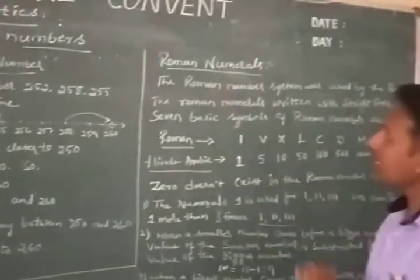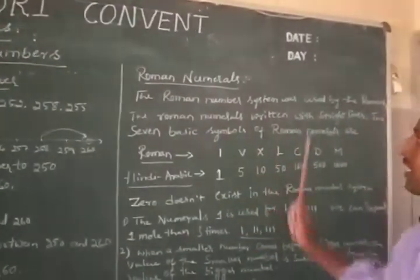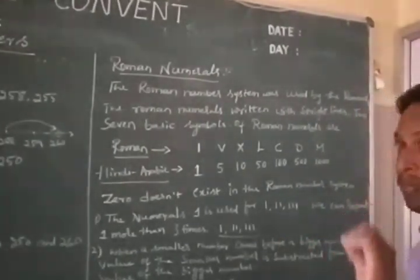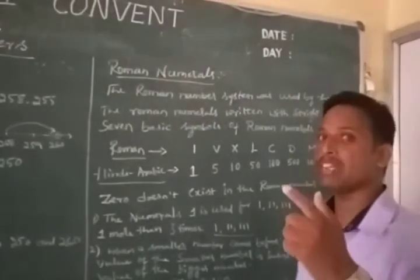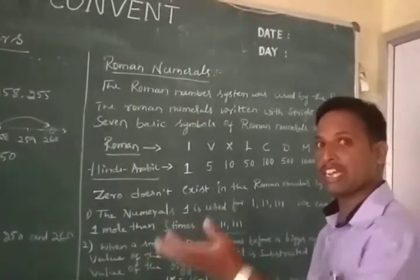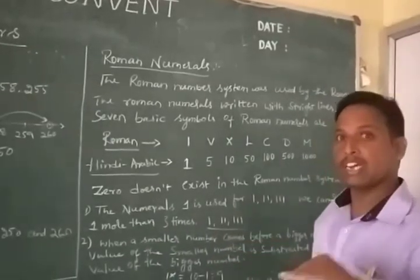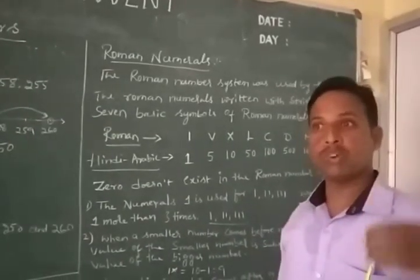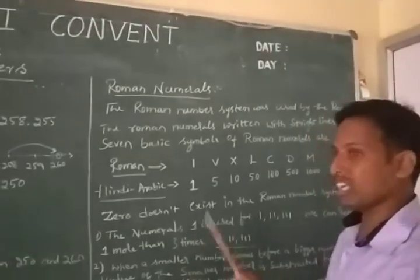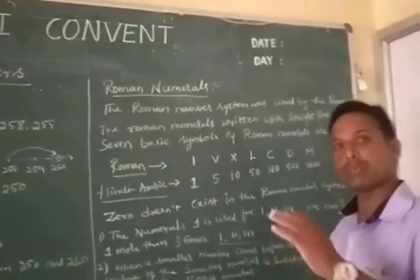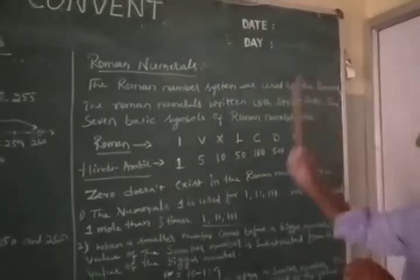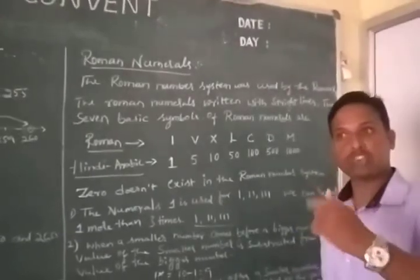Now we come to Roman numerals. The Roman number system was used by Romans. Roman numerals are written with strike lines, and Roman numerals use seven basic symbols.